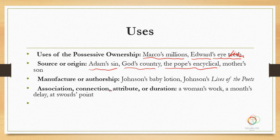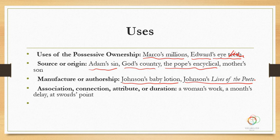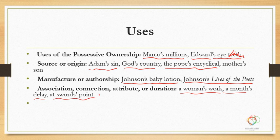Manufacture or authorship — as in Johnson's baby lotion. The baby lotion comes from Johnson, or Johnson and Johnson, whatever the company name is. And Johnson's Lives of the Poets: Lives of the Poets would be the title of the written work, and Johnson in this case would be the author. Also association, connection, attribute, or duration — as in a woman's work, a month's delay, at sword's point, and so on.